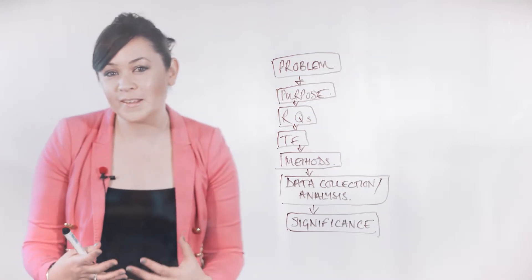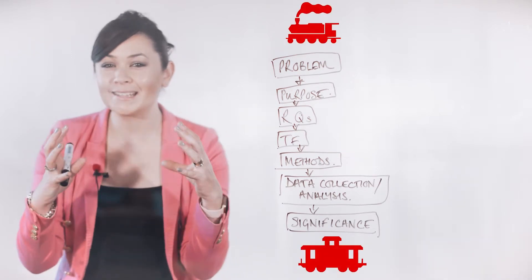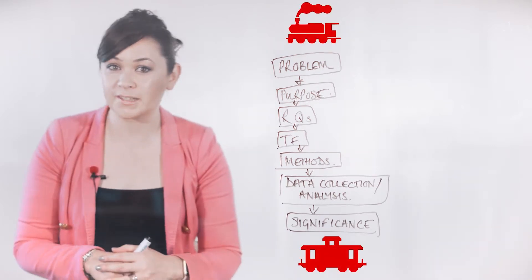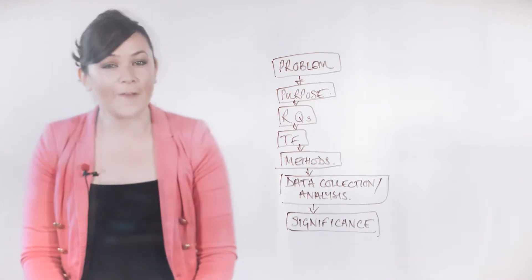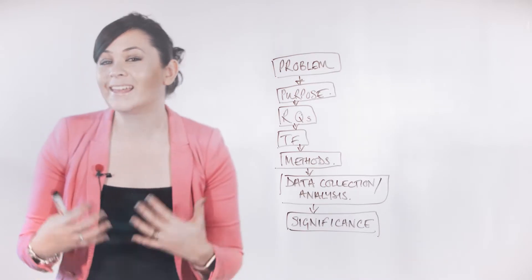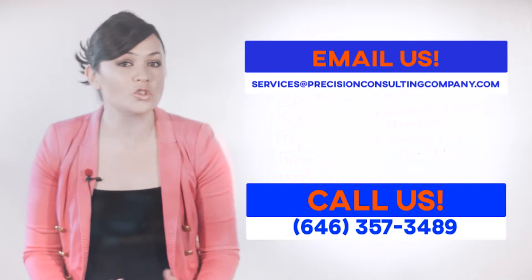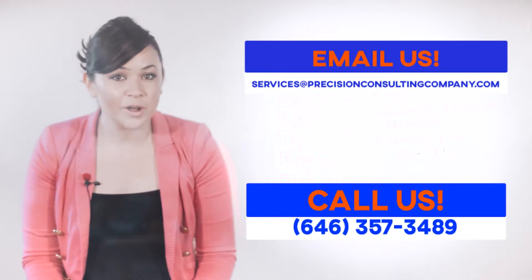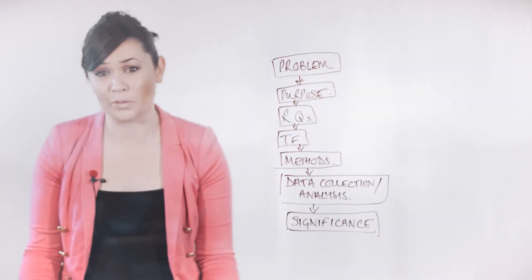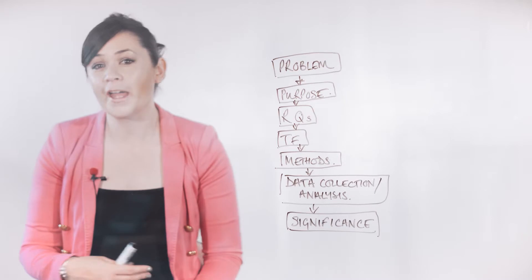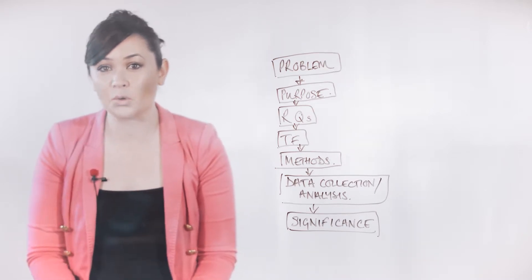You might visualize these different key pieces of your study as boxcars on a train that must all be linked together for your study to function successfully as a process for gaining new insights or understanding of your topic. If any of these cars are not linked to the car preceding it, then clearly your study will be a non-functional collection of segments that don't work well with one another. In other words, the train falls apart and never gets to its destination. So, to clarify how these different segments of your study fit together, let's move on to discuss each of these in more detail.